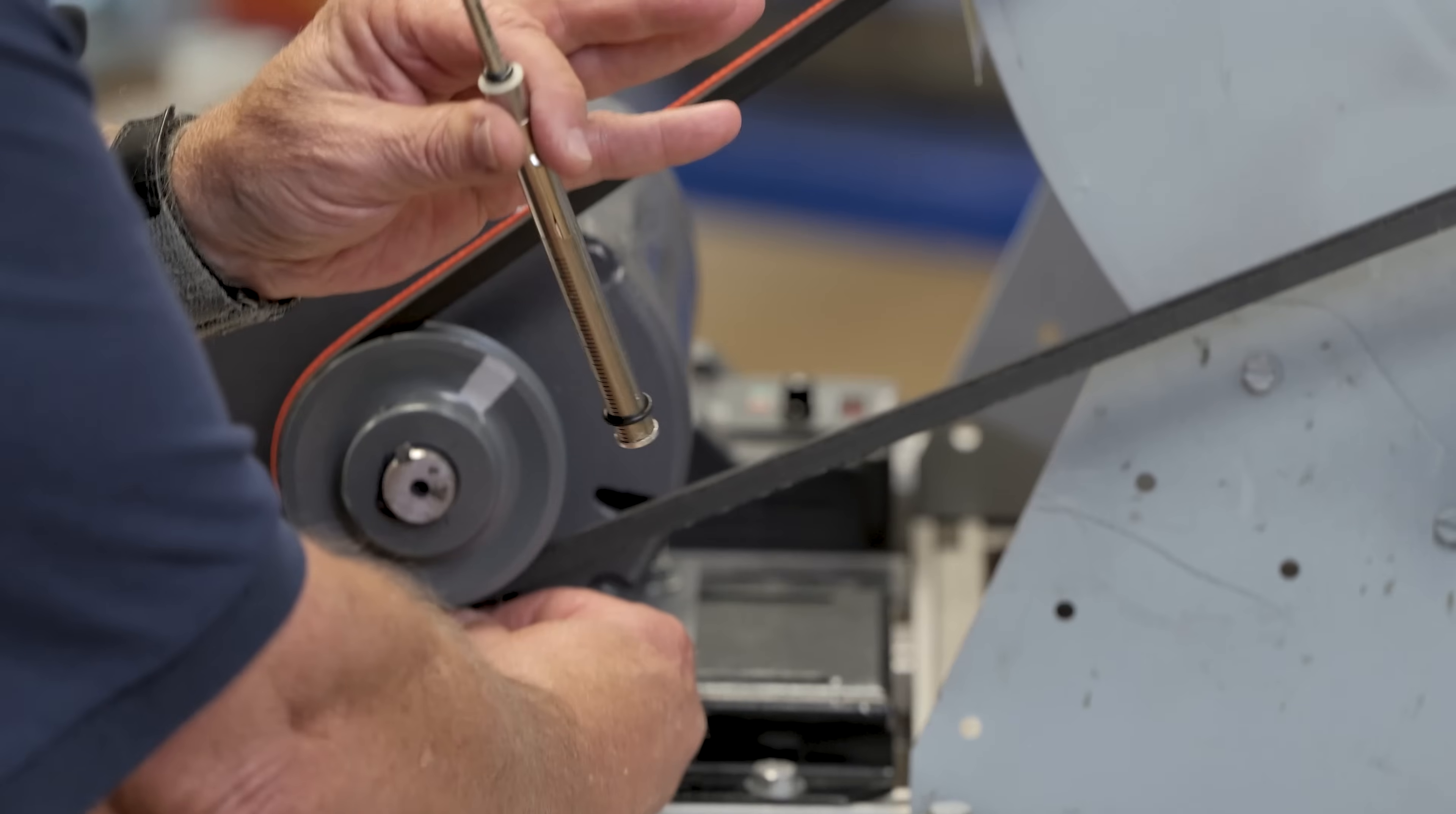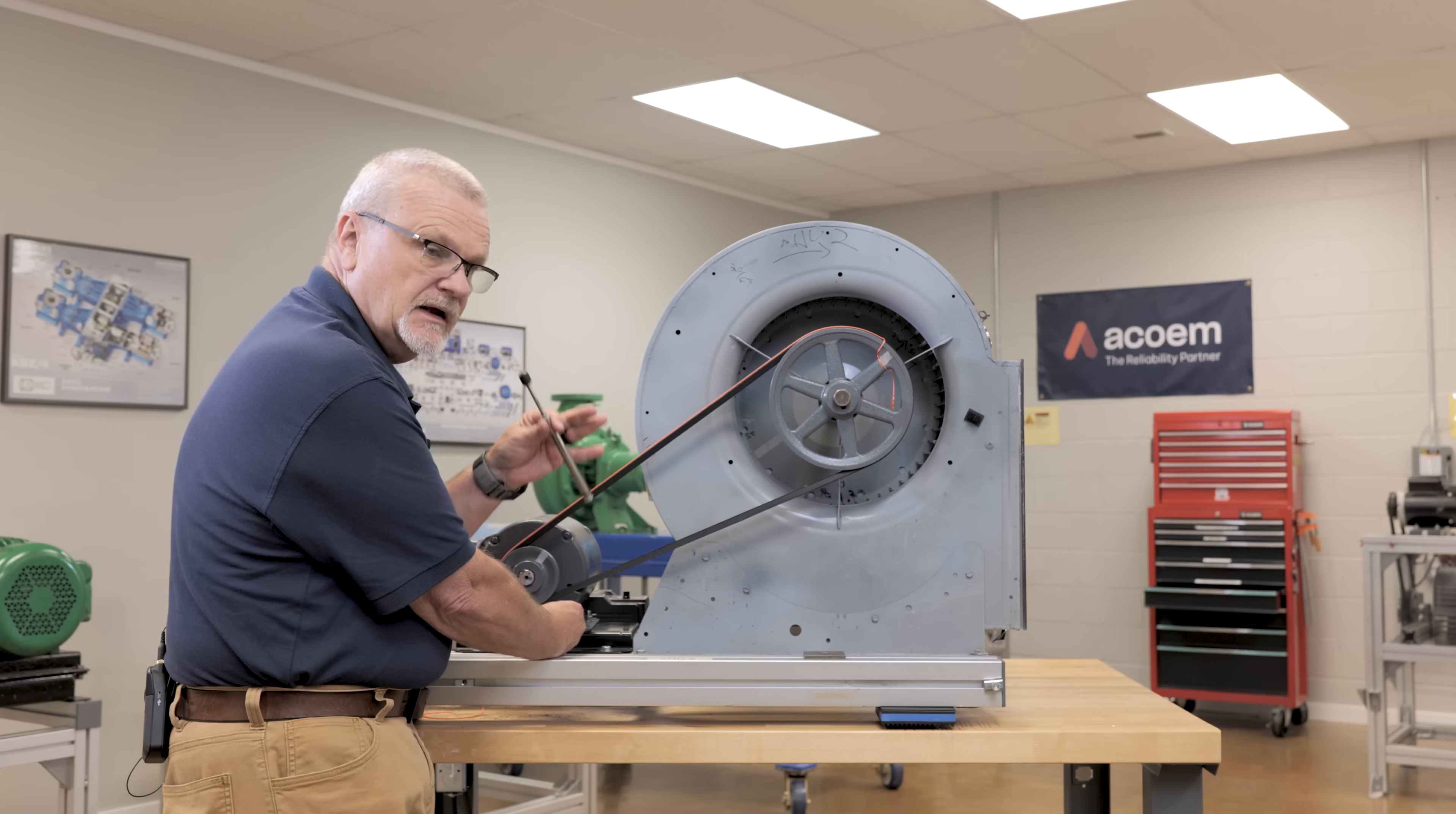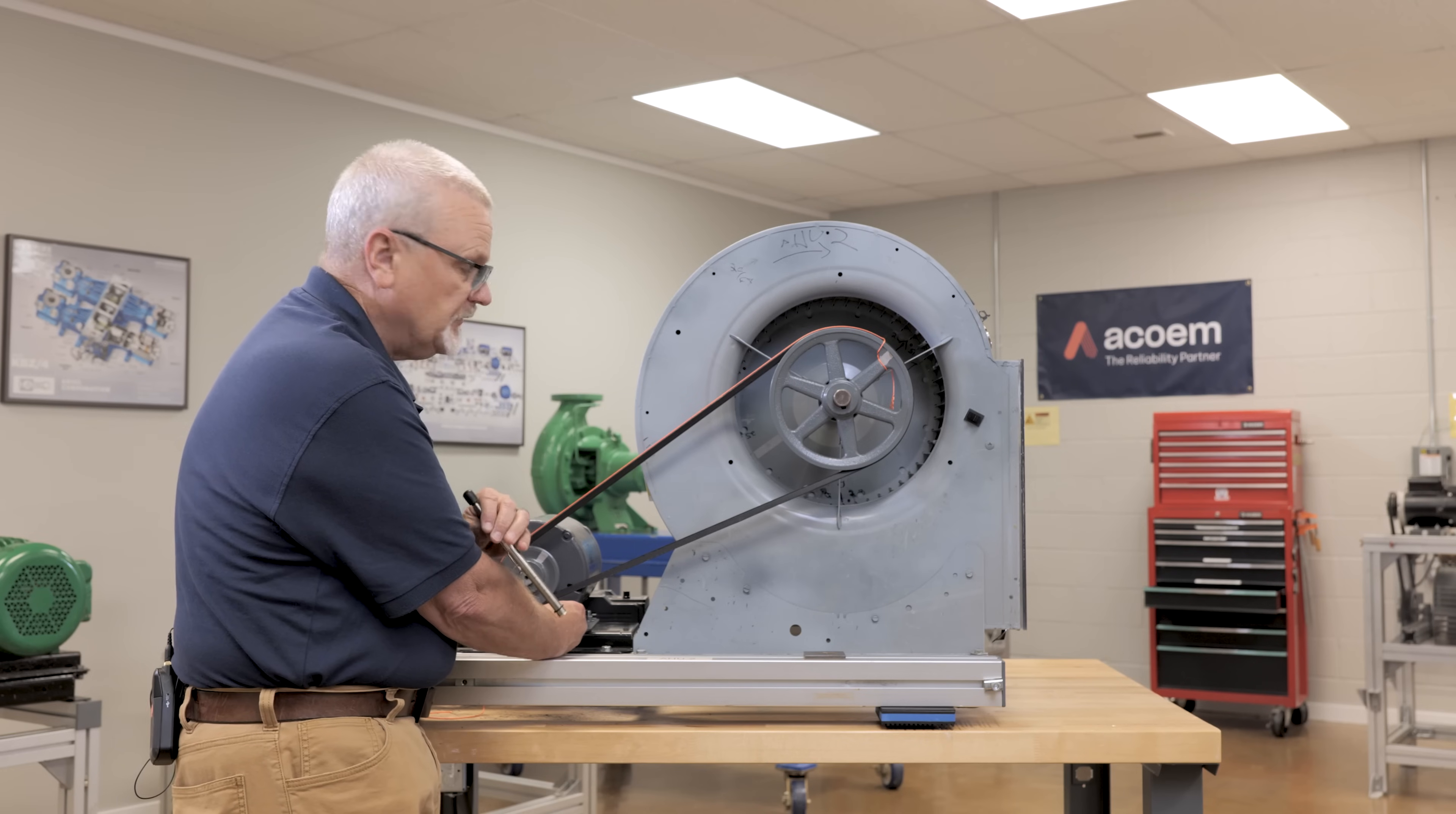So now I've adjusted the belt tension to get a little bit more tension because these were a little looser than they should be. And now I'm going to recheck it with the gauge. Remember we're shooting for about a third of an inch of deflection distance and 2.2 pounds of deflection force.